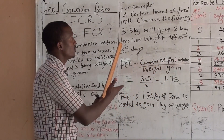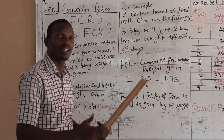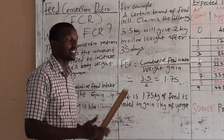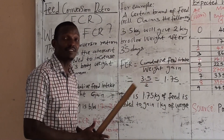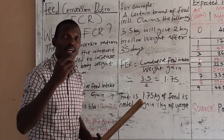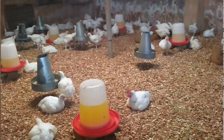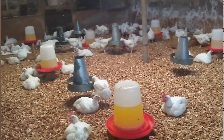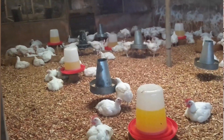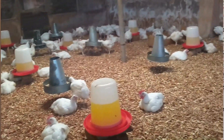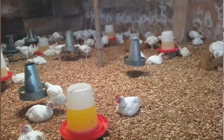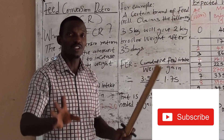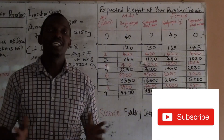What is left is to test the feed out to confirm it will deliver what is claimed. The two main goals of broiler production are feed conversion ratio and broiler weight gain — these are the two major goals of any farmer in the broiler production sector.